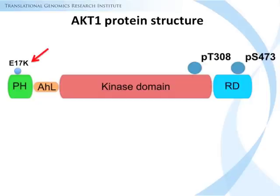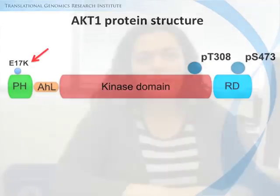The mutation is characterized by a glutamic acid to lysine substitution in the 17th amino acid position of the pleckstrin homology domain. The purpose of the current study was to understand the pathobiological role of the E17K mutation in human mammary epithelial cells.